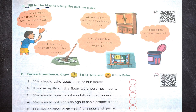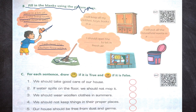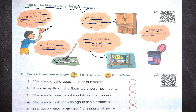Fill in the blanks using picture clues. There is a lot of dust in the living room — I should clean it with a duster. I will clean the kitchen floor with a mop. I will keep all my clothes and books in an almirah. I should open the windows to let in fresh air. I will put all the household waste in a dustbin.